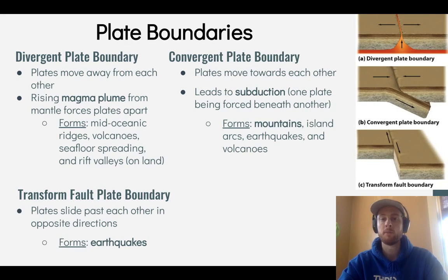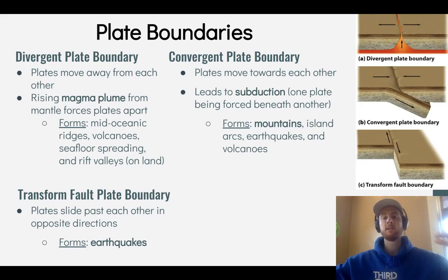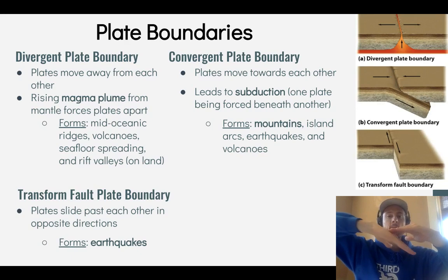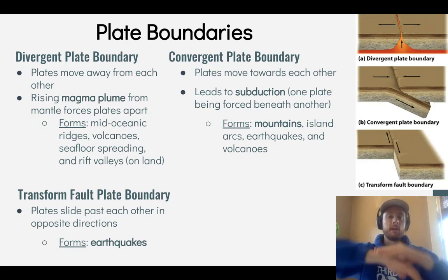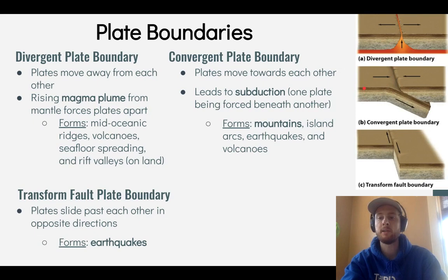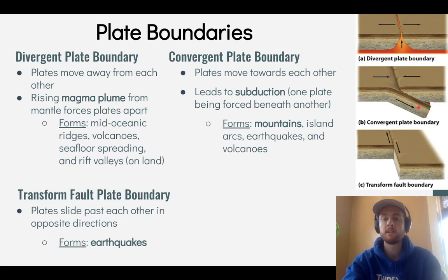Next, we have convergent plate boundaries. To converge means to come together, so these are plate boundaries that are colliding or moving toward one another. One plate gets subducted, or forced underneath another plate. We can see in the diagram that when they collide, one plate is forced down beneath the other — that's called subduction. This leads to the formation of mountains, island arcs, earthquakes, and volcanoes.